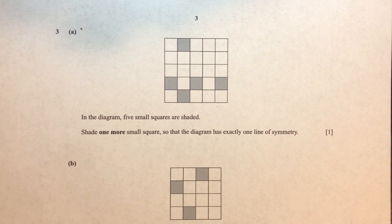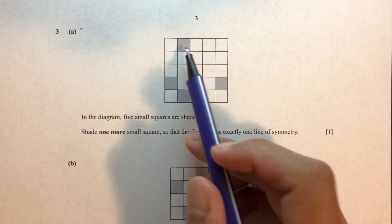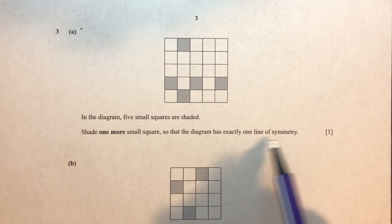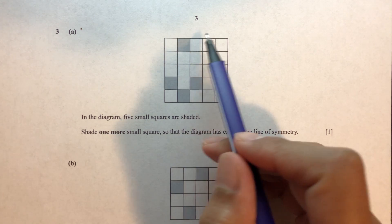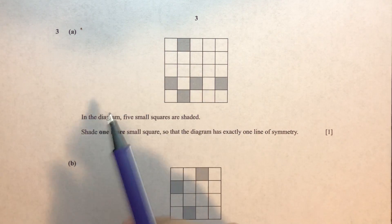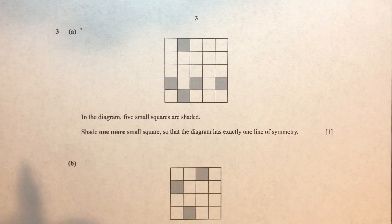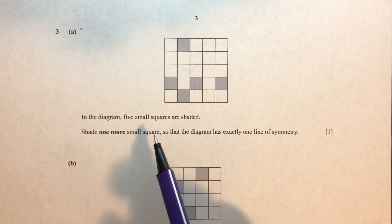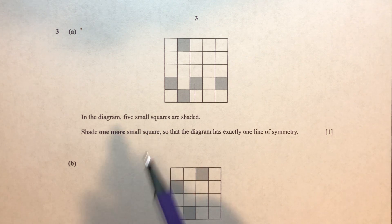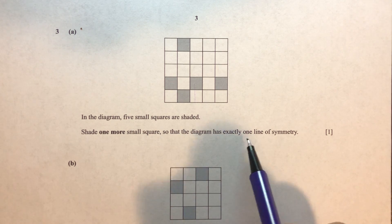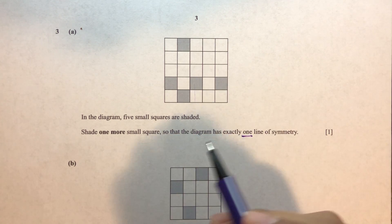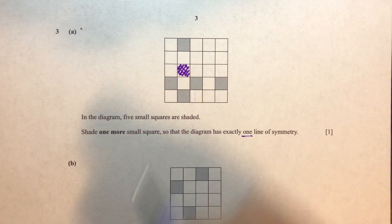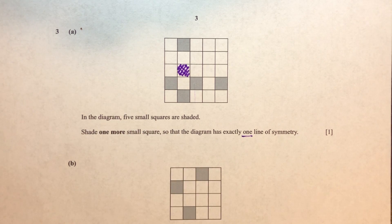Question number 3, part a. In the diagram, five small squares are shaded. We count: it's a 5 by 5 grid, which is a square. A square has four lines of symmetry. We need to shade one more square so the diagram has exactly one line of symmetry. By elimination, shading a specific square gives exactly one line of symmetry.